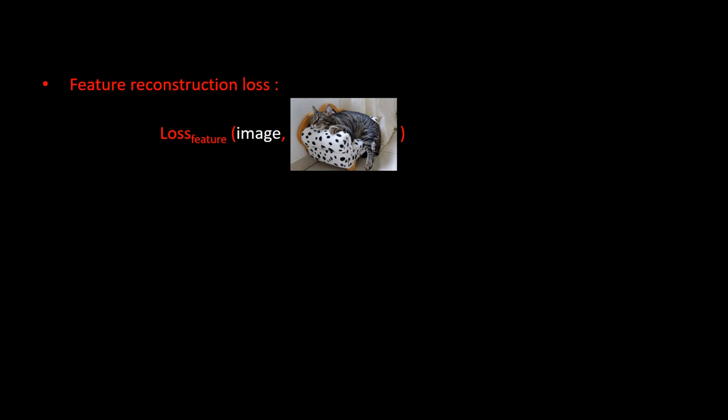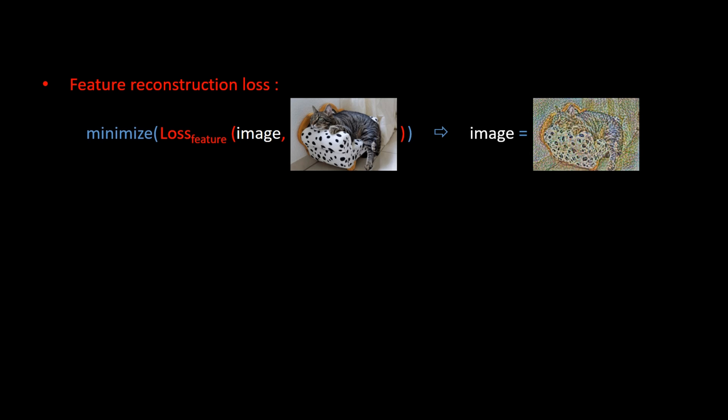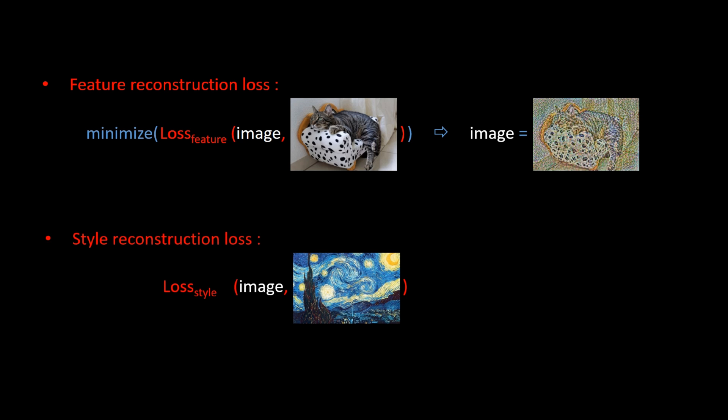In the spy experimentation, we have defined a feature reconstruction loss between two images. And we were able to construct an image similar in content to a reference image, by minimizing this loss. When it comes to style, we can in a similar way, define a style reconstruction loss.